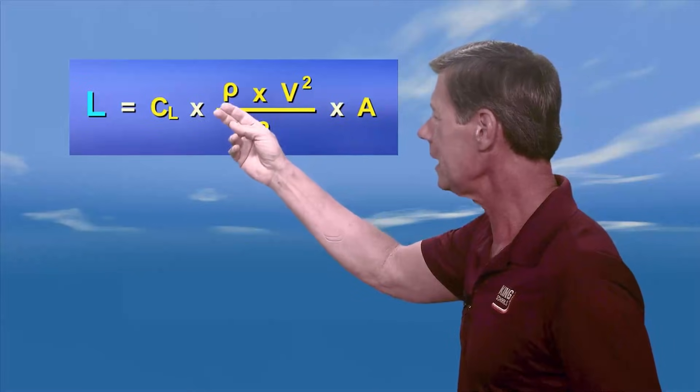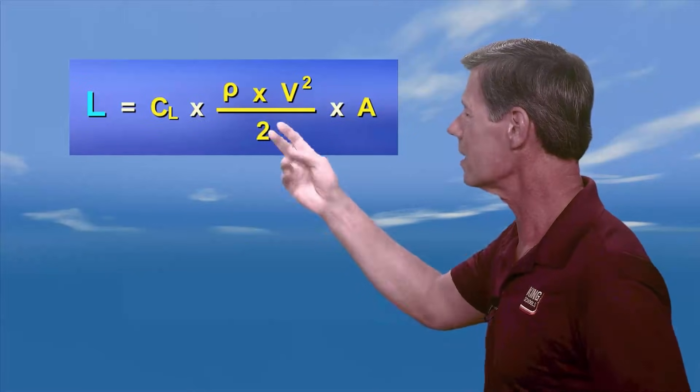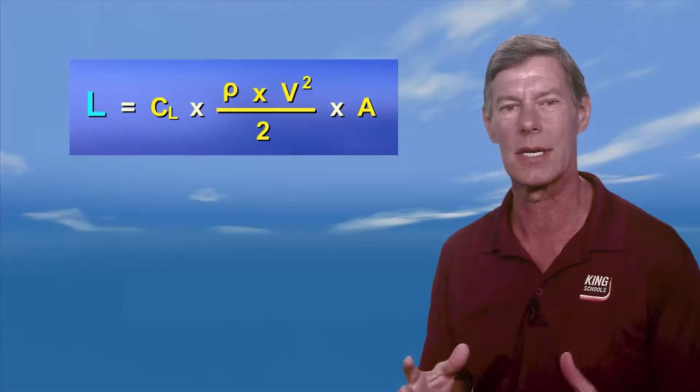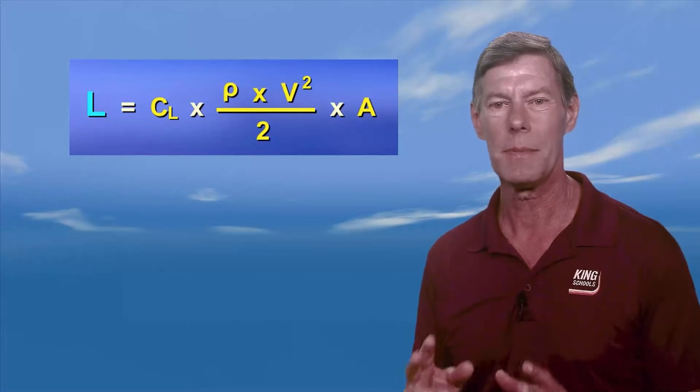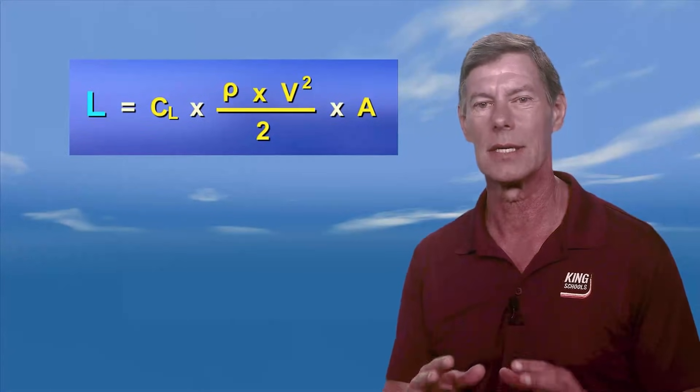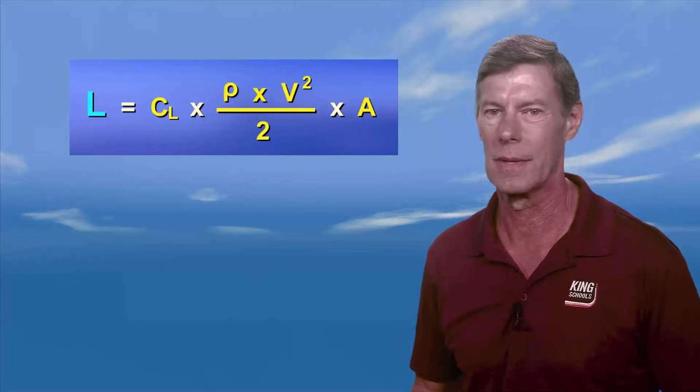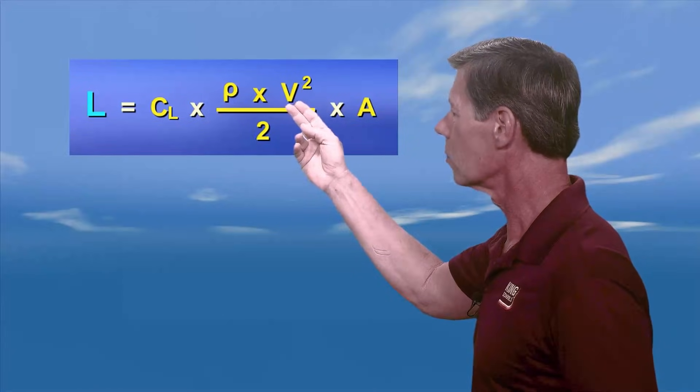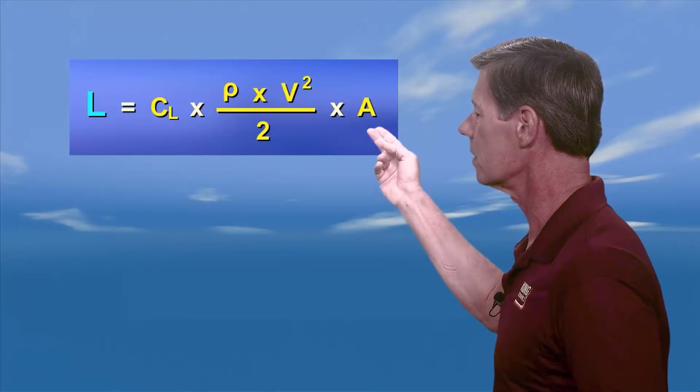And this little p-looking thing right here, this symbol is rho, which is air density. This represents how much mass is in a given volume of air. Now here's a pilot tip: keep in mind that air density decreases at higher altitudes or with higher temperatures. V is for the speed of the airplane relative to the air, and A is the surface area of the wing.